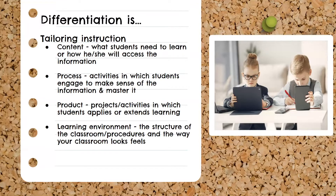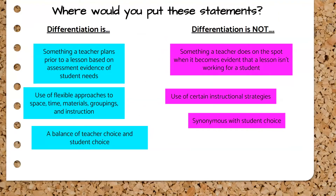When we differentiate, we're tailoring instruction for our students by looking at content — what students need to learn or how they will access the information — process, the activities in which students engage to make sense of and master material, and the product, the things students produce, the projects or activities in which students apply or extend their learning. We also take into consideration the learning environment: the structure of the classroom, the procedures, and the way the classroom looks and feels. Now take a look at these statements.